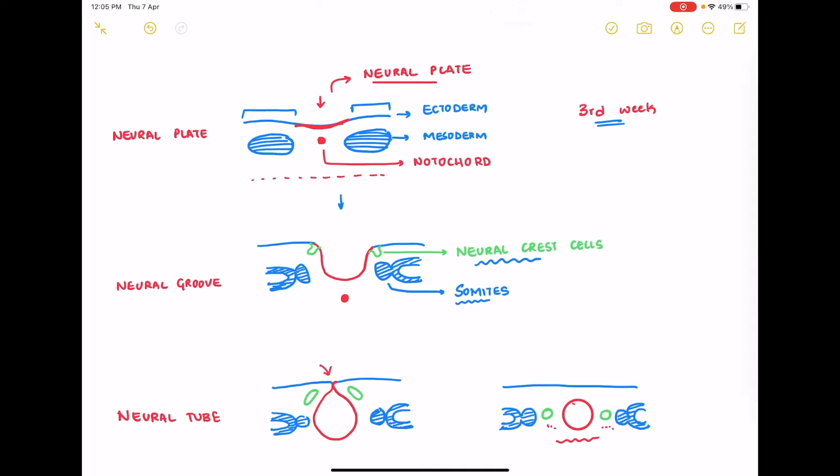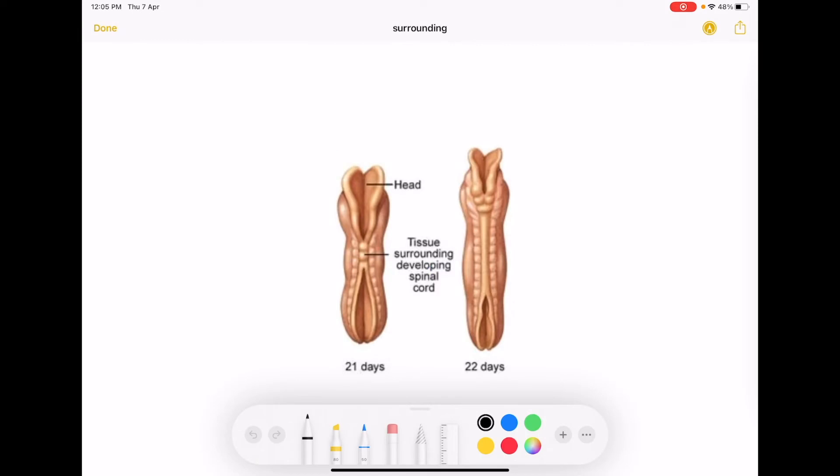The entire process of the surface ectoderm, the tips of the surface ectoderm coming together and the neuroectoderm separating from the surface ectoderm does not occur at the same time throughout the length of the neural tube. It starts in the cervical region as shown in this picture here and it spreads cranially and caudally, it closes like that.